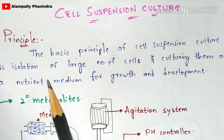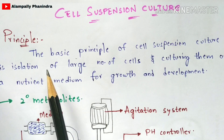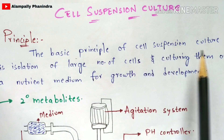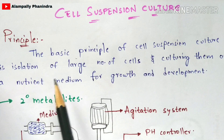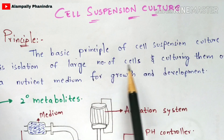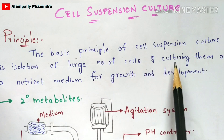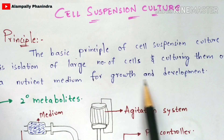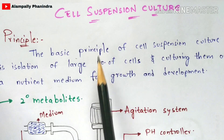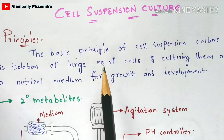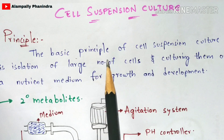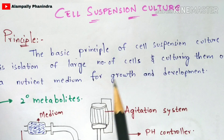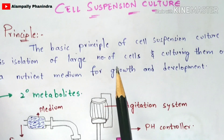Coming to the principle, the basic principle of cell suspension culture is the isolation of a large number of cells and culturing them on a nutrient medium for growth and development. You can understand this principle better when I explain the procedure.